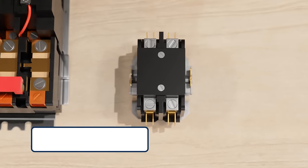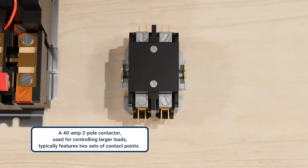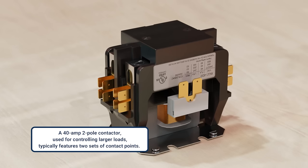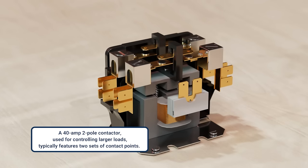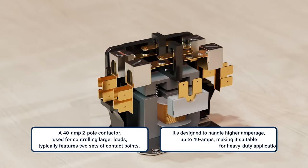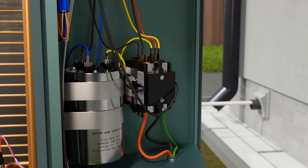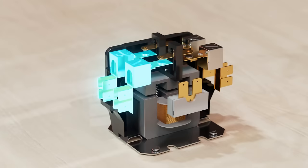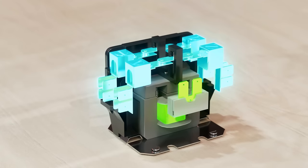A 40-amp two-pole contactor is often used in larger residential and light commercial systems. And this two-pole contactor has two sets of contact points. It's designed to handle higher amperage up to 40 amps. This is why you'll often see contactors like this controlling compressors that potentially have higher current draw. It operates very similar to a relay. It has a coil, but all of the contacts are normally open and close upon energizing.